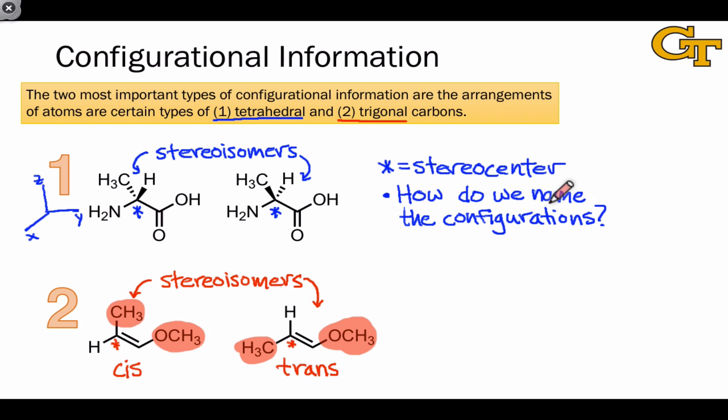And whether the groups bound to the alkene carbons are cis or trans is useful configurational information. Notice here that the terms cis and trans are one way to name the configurations, but we're going to develop a somewhat more formal system for naming configurations in alkenes that doesn't depend on the presence of hydrogens within the molecule. As in the case above, the starred carbons within these alkenes are stereocenters, because exchanging the positions of two groups at the stereocenter produces a stereoisomer.